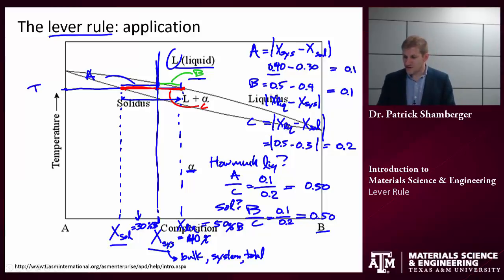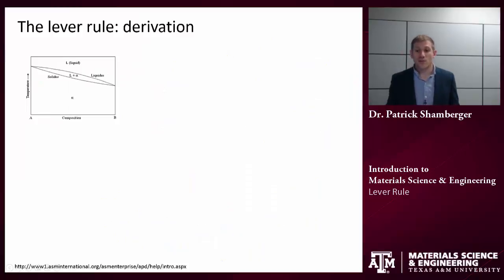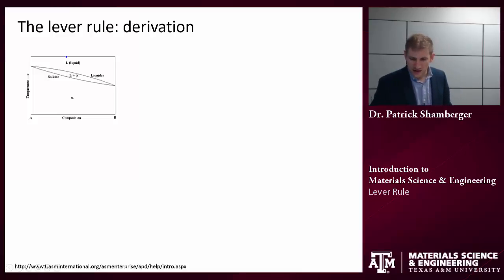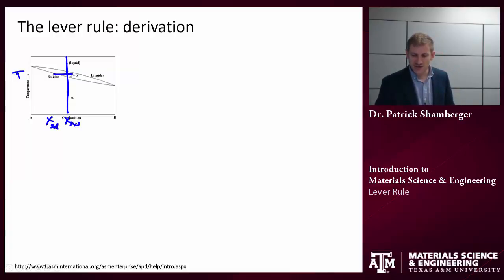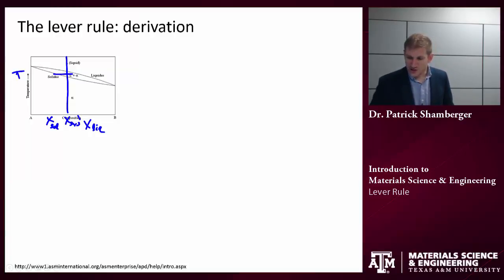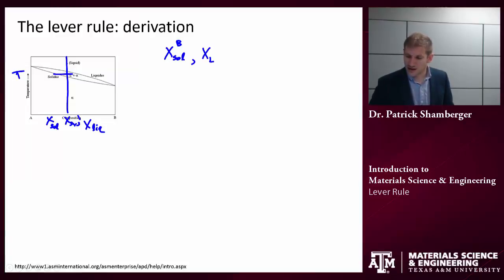Let's talk about derivation — where does the lever rule come from? It's related to mass balance. At some composition of the system and some temperature, let's define: x-solid, x-liquid, and x-system, all in terms of component B. I'll also define w for mass fraction — the mass fraction of phase alpha and the mass fraction of liquid — and the mass fractions of these two phases added together must equal 1.